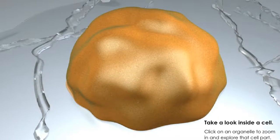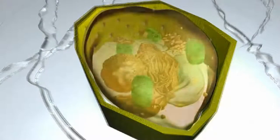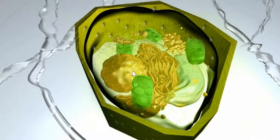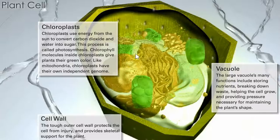Animal cells are not the only ones that hold a nucleus. Plant cells also need to have directions on how to function. As you see on the screen here, we have a nucleus as well. This nucleus holds the information — the Book of Life, the DNA — to direct all of the other pieces of the cell in a plant cell, just as in an animal cell.